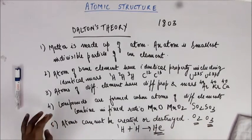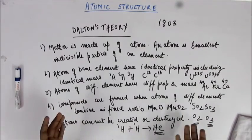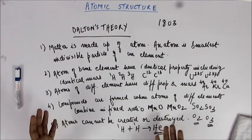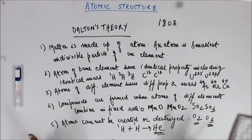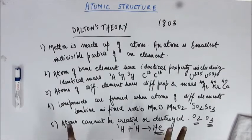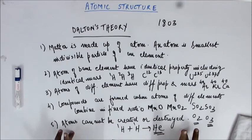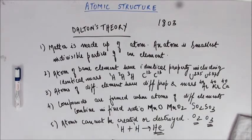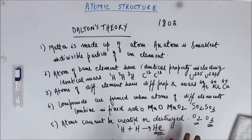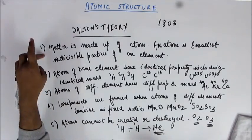Statement four holds true for most of the gaseous reactions which Dalton observed, and which we still see today. Statement five — 'atoms cannot be created or destroyed' — is true for all chemical reactions. Atoms are created and destroyed only in nuclear reactions, not in chemical reactions. This statement was entirely true for all the reactions known to humankind at the time, in 1803. These five statements still hold good with only exceptions; they were not entirely wrong for the context in which Dalton was working.